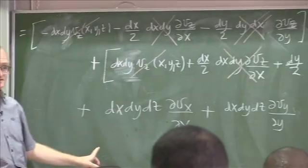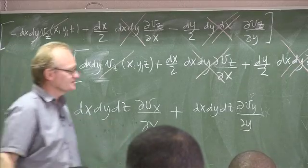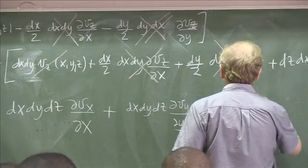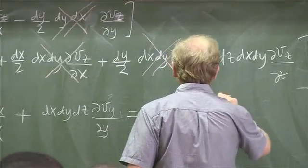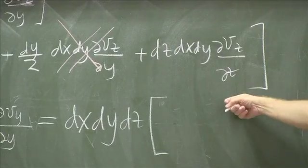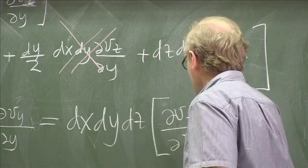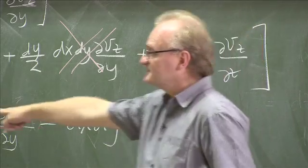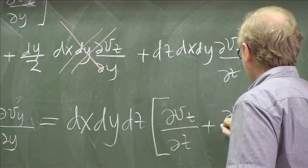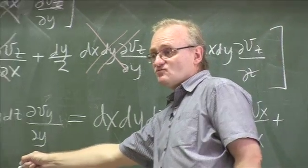So if we sum these three terms together, you can see dx, dy, dz is common. So we will get dx, dy, dz. And then what do we have left? dvz/dz, plus dvx/dx, plus dvy/dy.